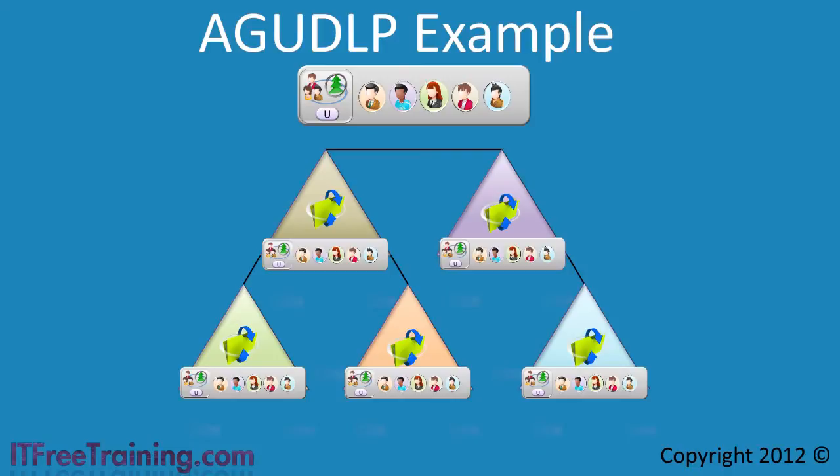Let's first consider administration. Having just the one top sales group would require the administrator or administrators to have knowledge of all the sales people that need to be in that group. You could select one administrator in each domain to keep this group up to date, but the problem is that all administrators will have equal access — they can all add and remove users from any domain and put them into the universal group.